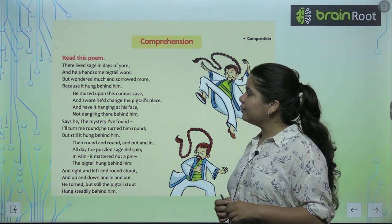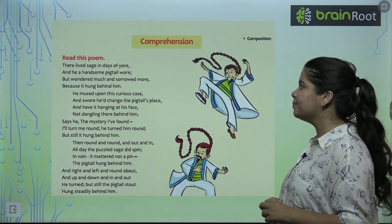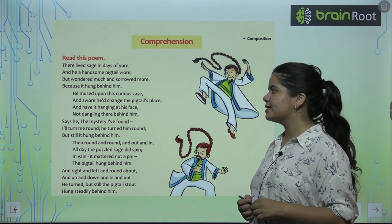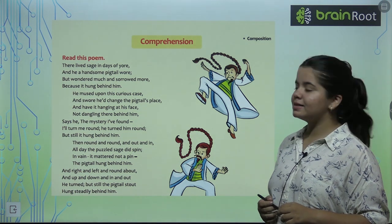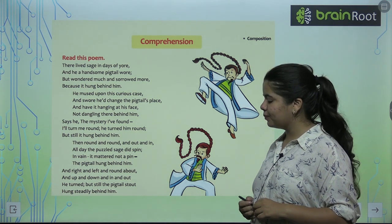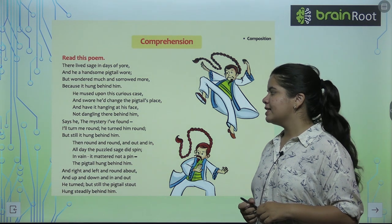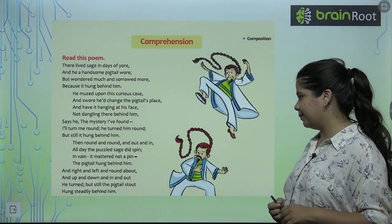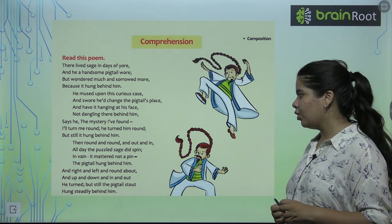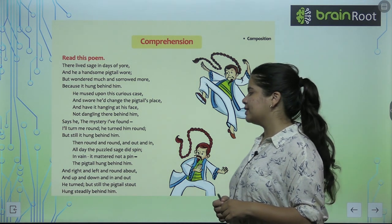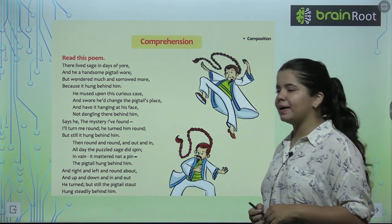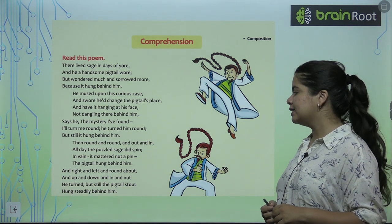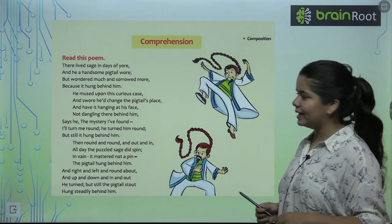Let's see, here we have a poem. So let's see this poem: There lived a sage in days of yore, and he a handsome pigtail wore, but wondered much and sorrowed more, because it hung behind him. He mused upon his curious case, and swore he'd change the pigtail's place, and have it hanging at his face, not dangling there behind him. Says he, the mystery I've found. I'll turn me round, he turned him round, but still it hung behind him. Then round and round, and out and in, all day the puzzled sage did spin. In vain it mattered not a pin, the pigtail hung behind him.